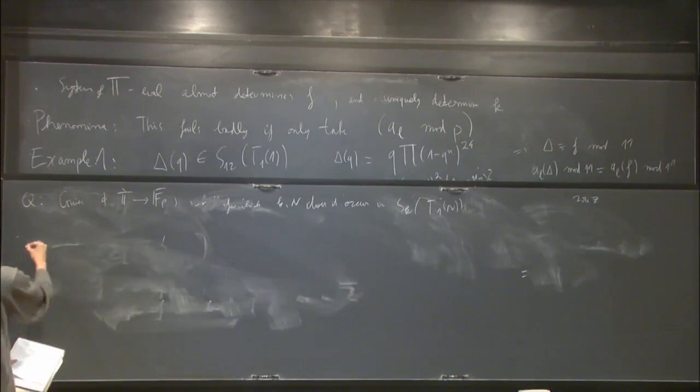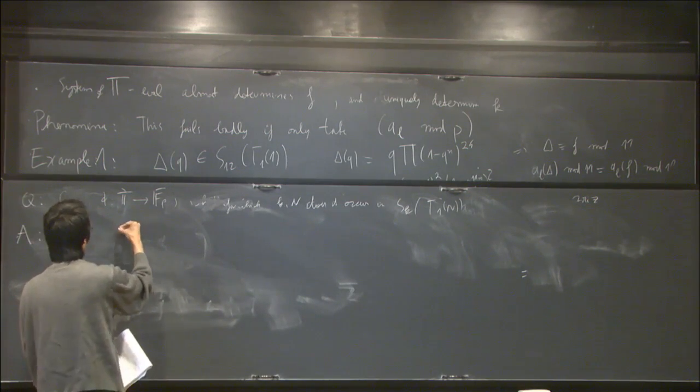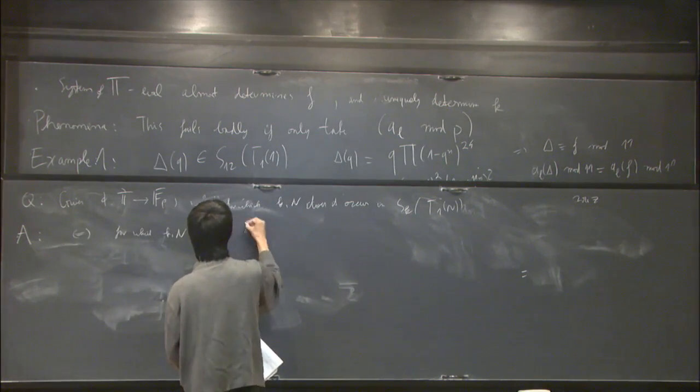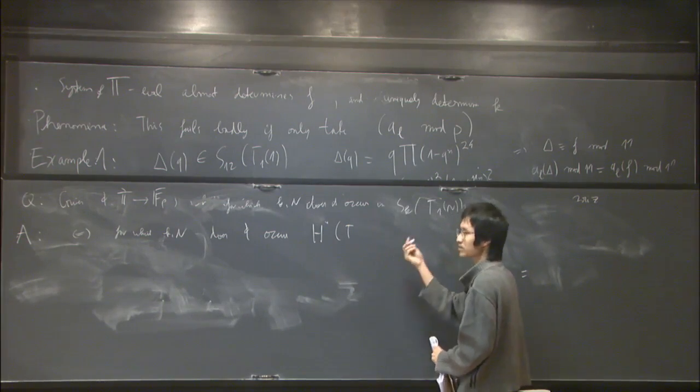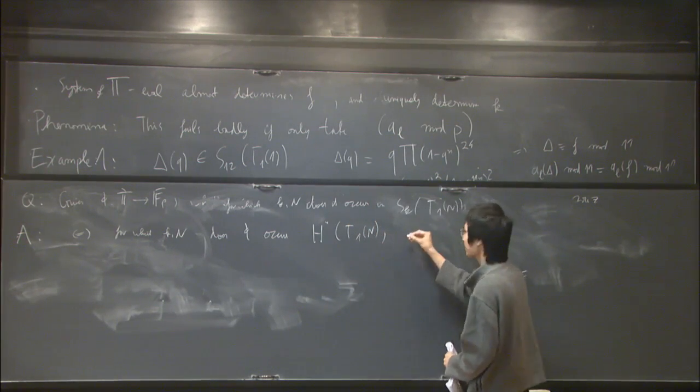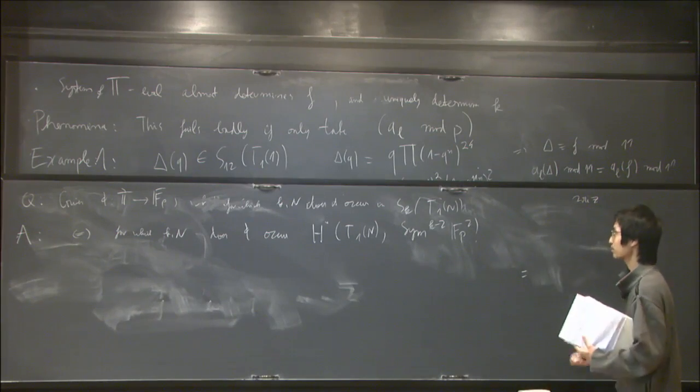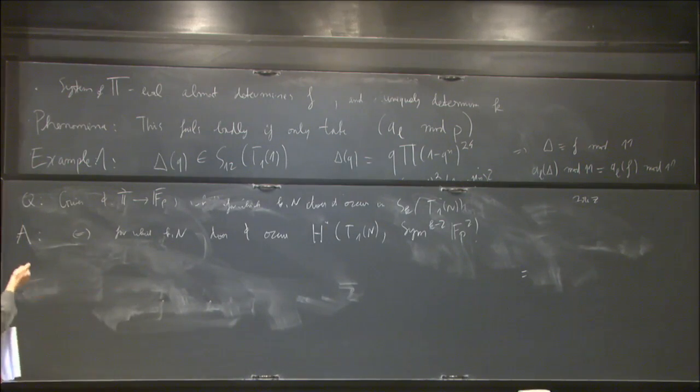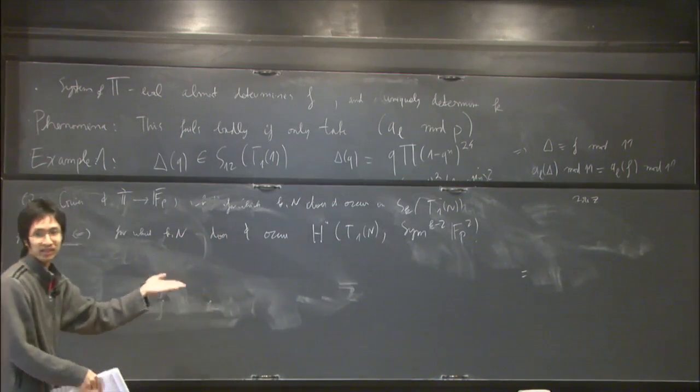And so we have described the answer, the classical answer in this case. So it turns out that this question is equivalent to asking for which k and n does phi occur as the eigenvalues of a cohomology eigenclass in the cohomology of the arithmetic group with respect to a suitable representation of the arithmetic group.